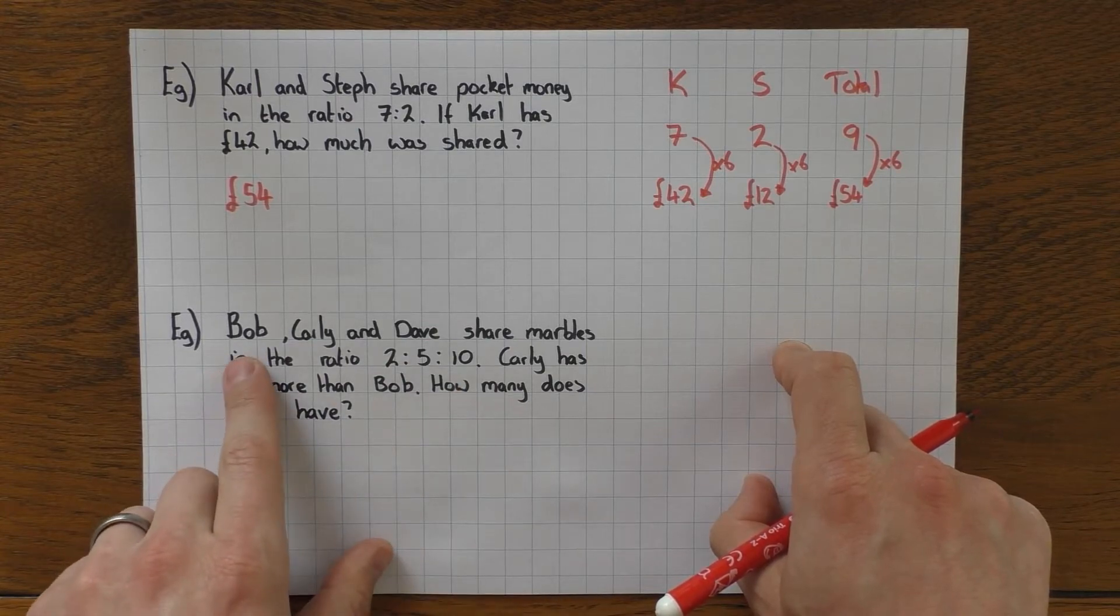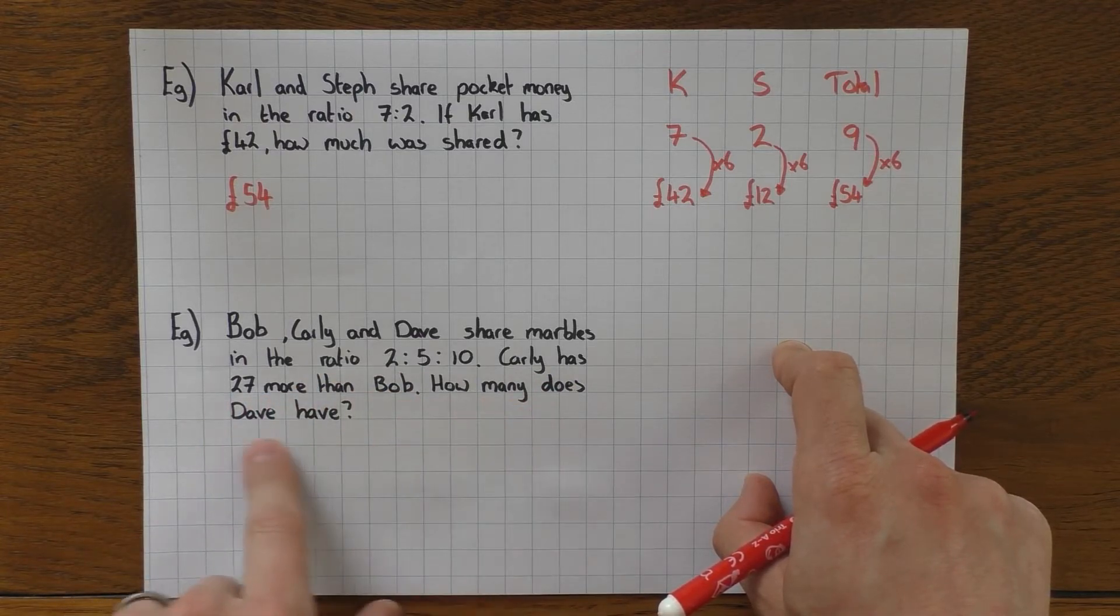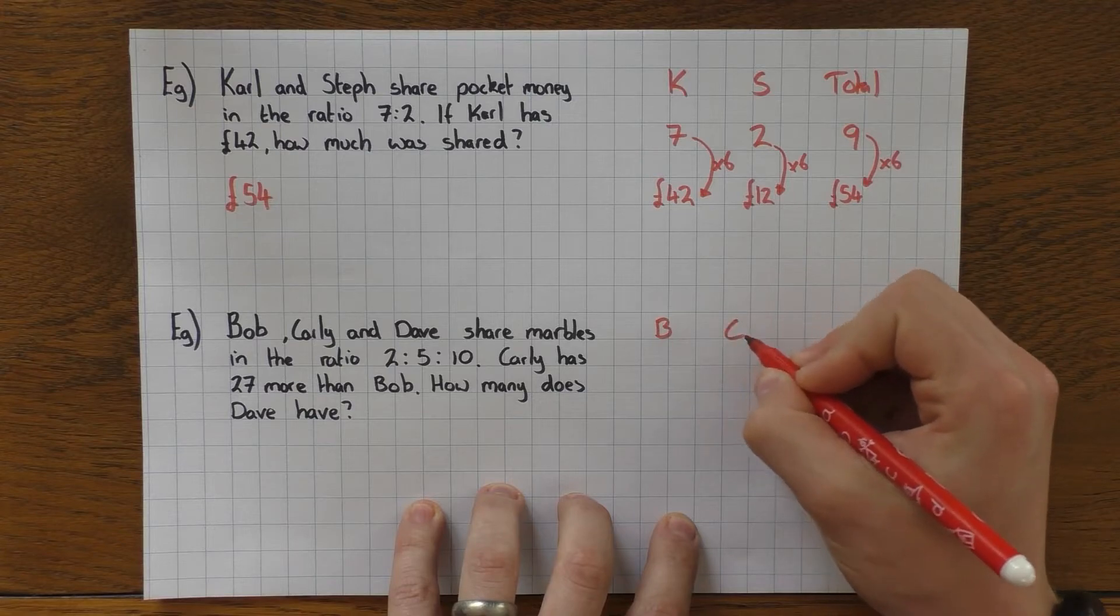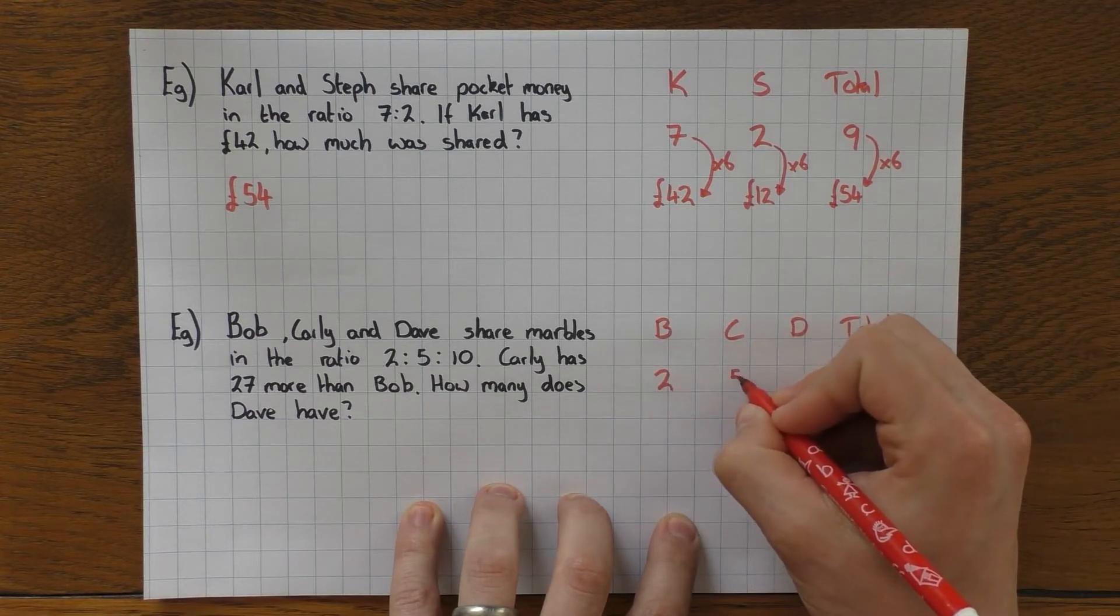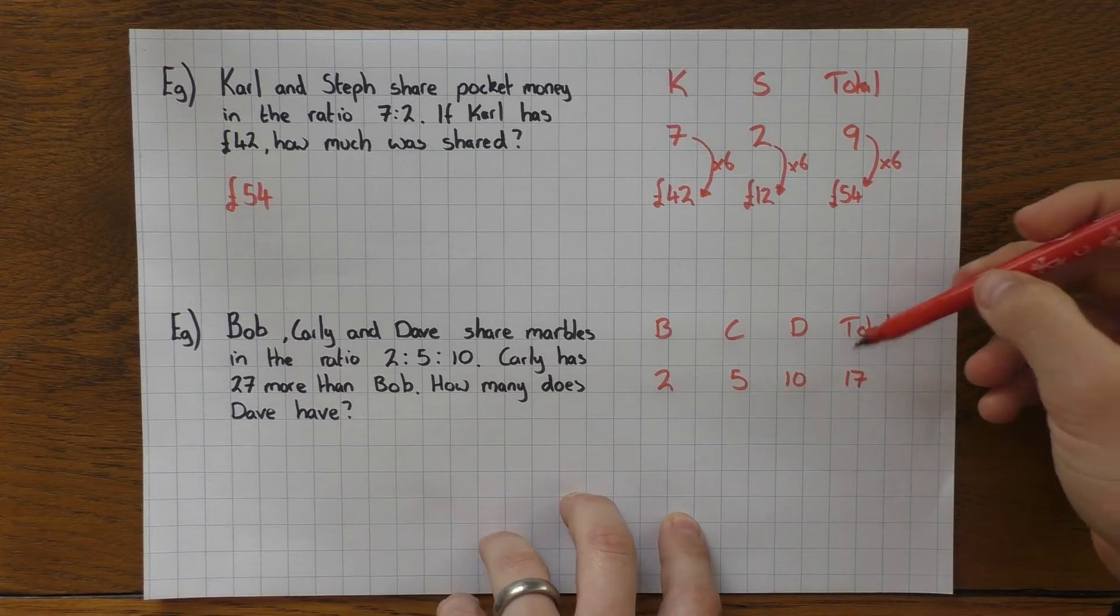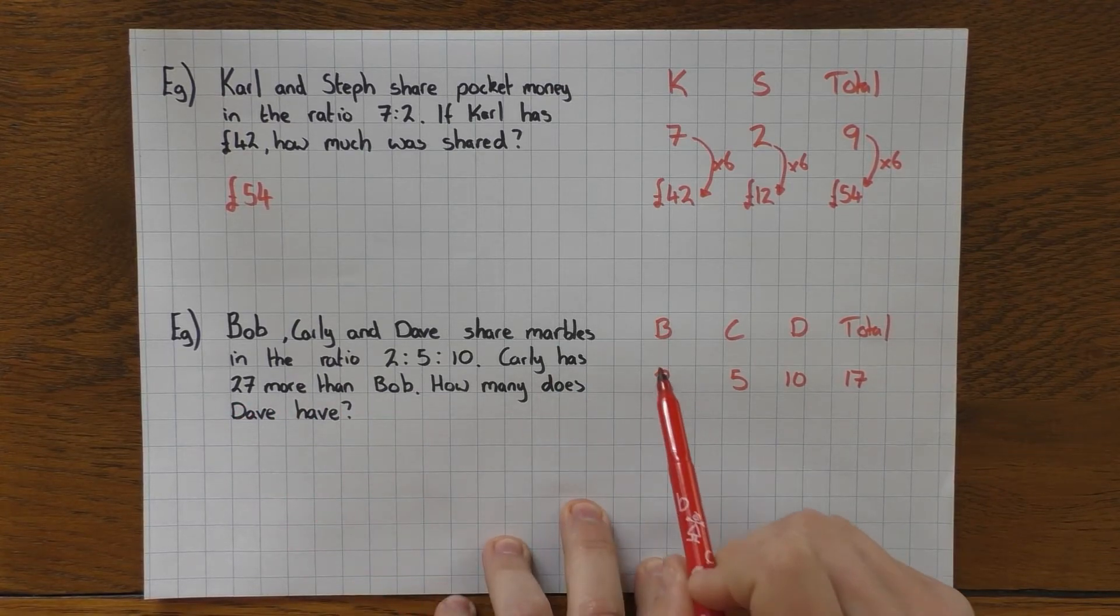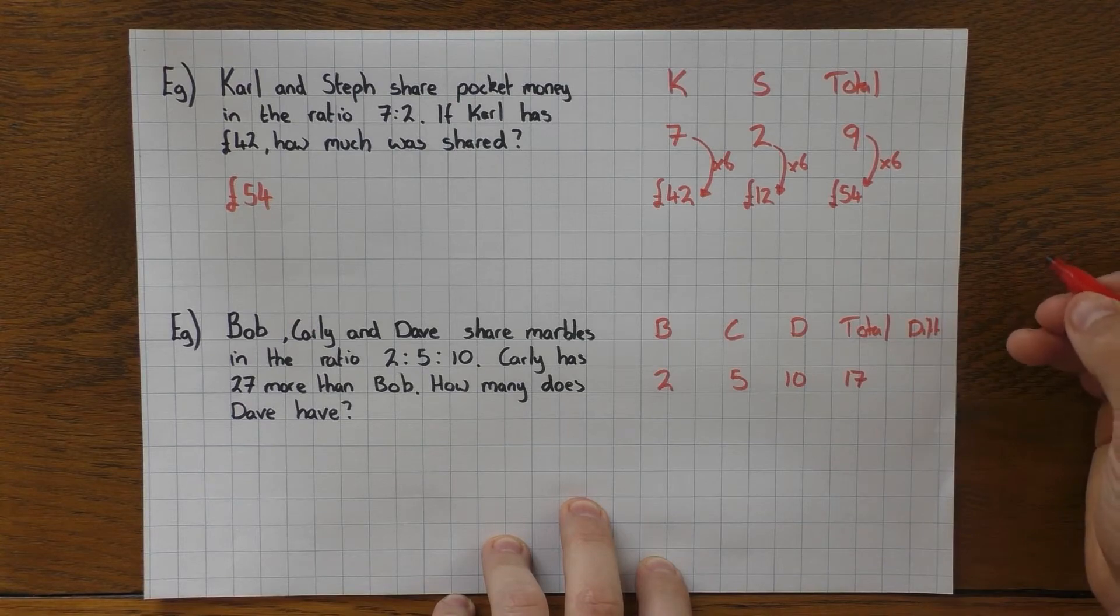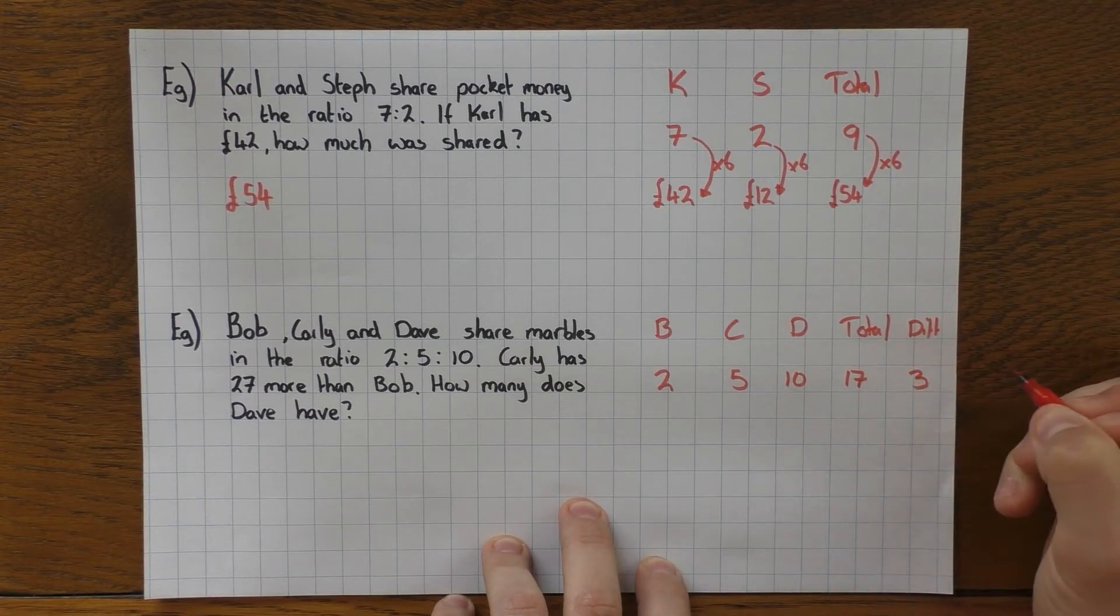Slightly different in the fact of how we fill it in. Here we go, here's another one. Bob, Carly and Dave share marbles in the ratio of 2:5:10. Carly has 27 more than Bob. How many does Dave have? So again, a bit of ratio—draw a table. So B for Bob, C for Carly, D for Dave, and my total. So the ratio would be 2 for Bob, 5 for Carly, and 10 for Dave, and then that's a total of 17. Now in this case the total column doesn't actually come in handy because it tells us that Carly has 27 more than Bob. So what it's actually doing is comparing the difference between Carly and Bob. So all I'm going to do is just add another column on my table called 'diff,' just means difference.